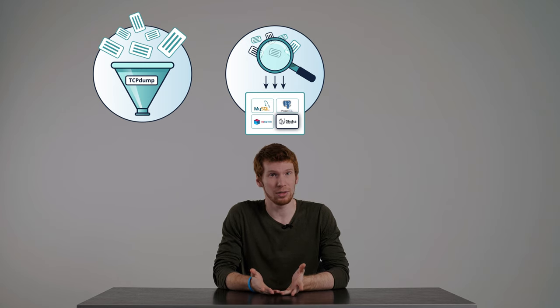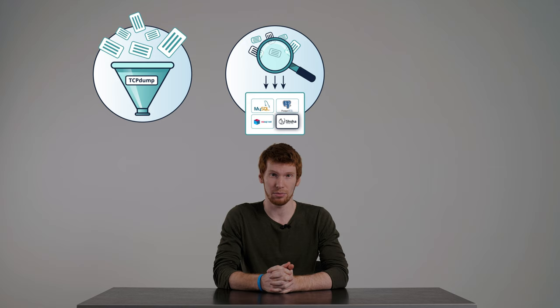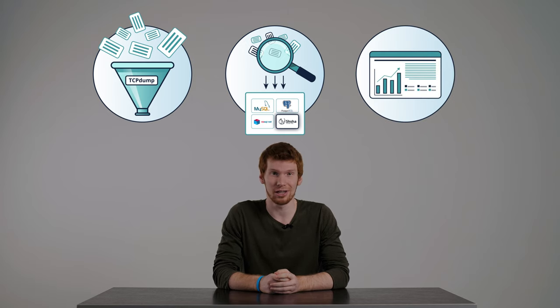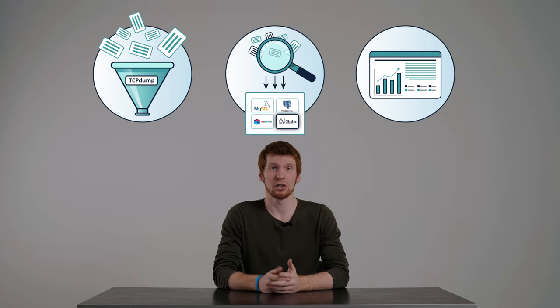The approach includes collecting and processing messages, storing them in the database, and consequently their analysis. First, we collect all possible messages, their fields and field values via network capture, or we can get them from the system logs. Secondly, we retrieve the necessary data from the logs or the TCP dump after the full run of the test library and store this data in a database. In our case, Exactpro's passive testing tool Shisha does that. Last but not least, we analyze the results from the database — it can either be done manually by an analyst or automatically using a special script.